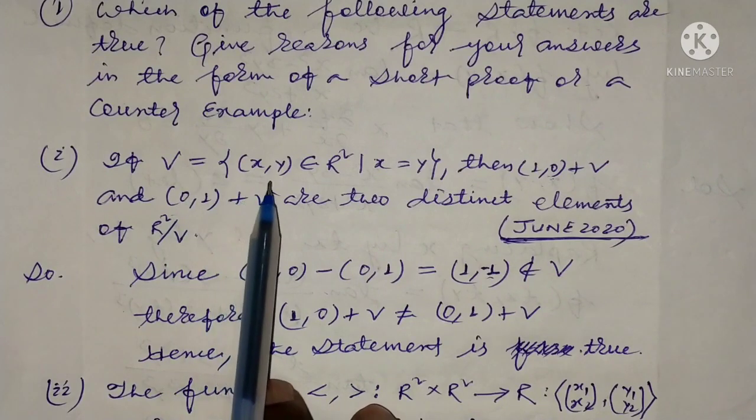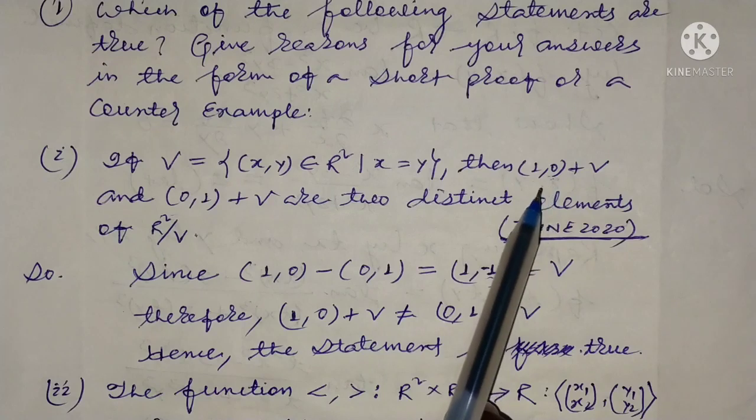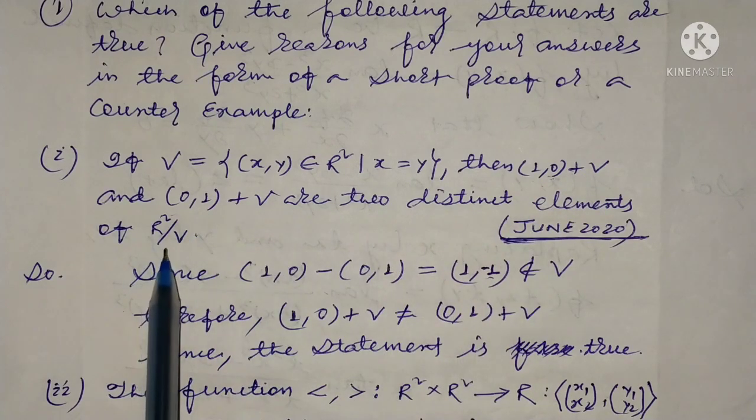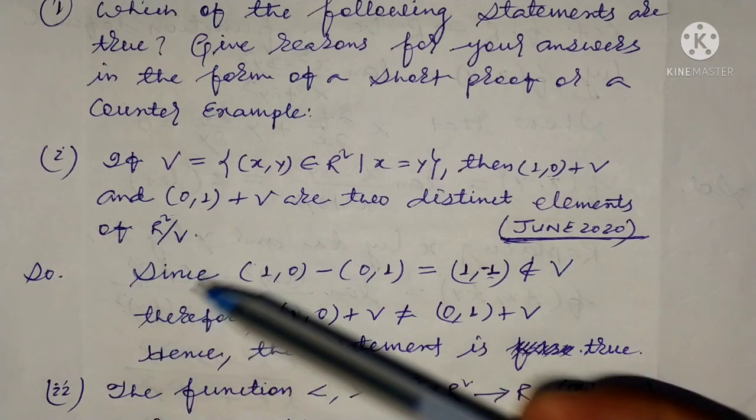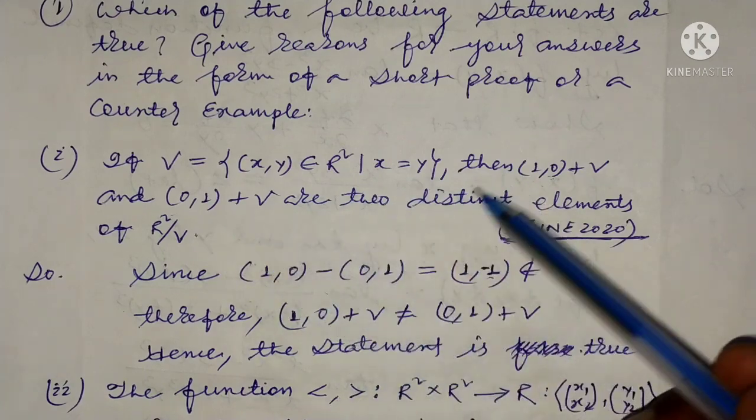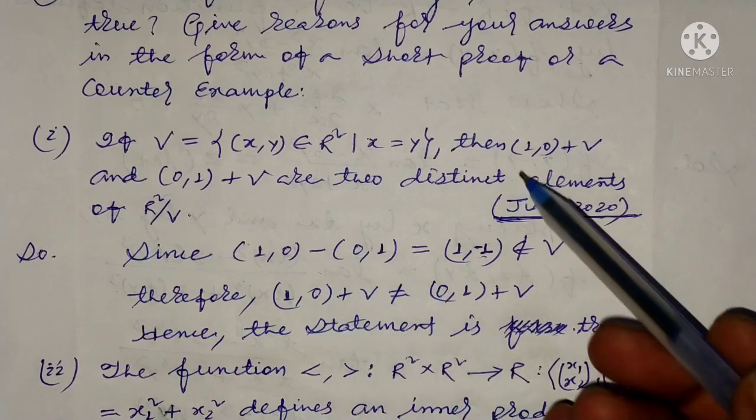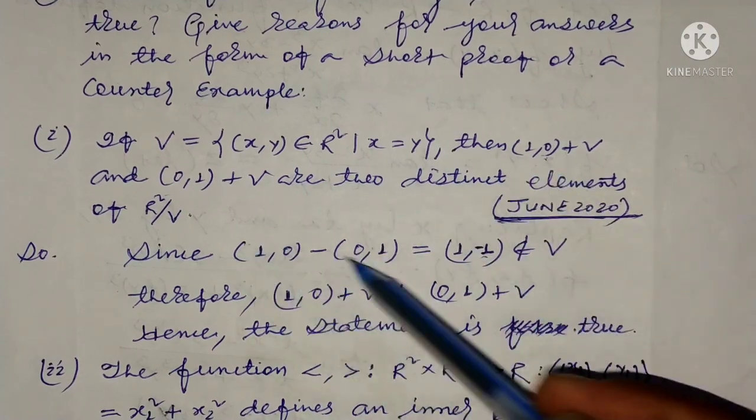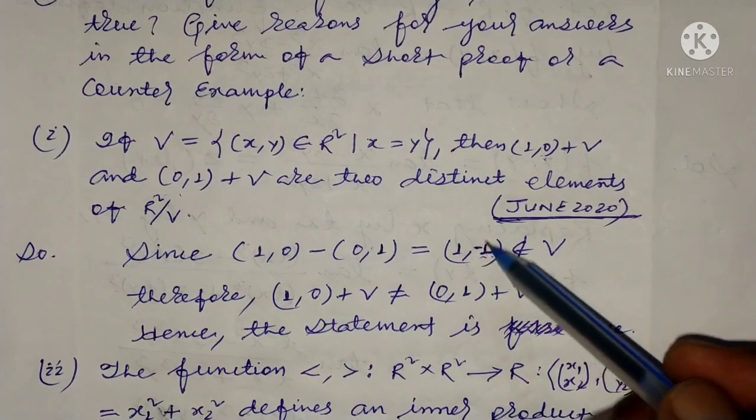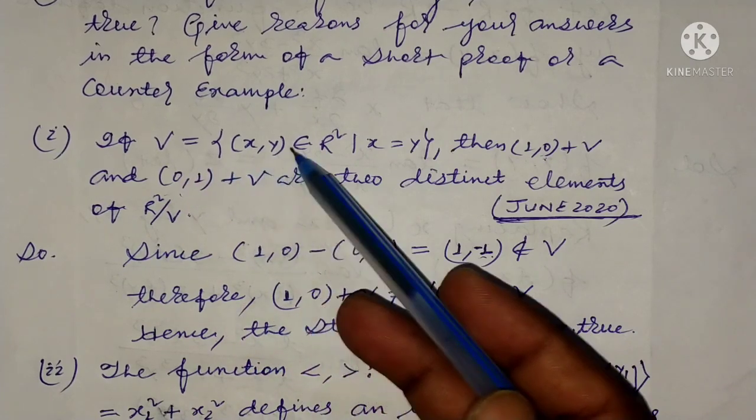If V is equal to the set of all ordered pairs (x,y) belongs to R² such that x equals y, then (1,0) + V and (0,1) + V are two distinct elements of R²/V. We have to see if (1,0) - (0,1) equals (1,-1) is in V. Since V equals {(x,y): x = y}, (1,-1) is not an element of V.